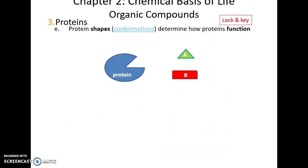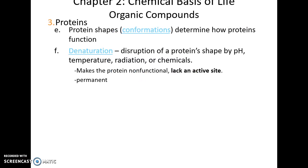Protein shapes, also known as conformations, help determine how they function. For instance, an enzyme will only work with a molecule that fits in its active site — B will not fit if it's the wrong shape. This is often called the lock-and-key mechanism. Denaturation is when the conformation is disrupted and the protein's shape is changed, losing its active site. This can result from extreme pH, extreme temperatures, radiation, or chemicals, and usually permanently disrupts the protein's ability to function.